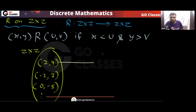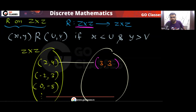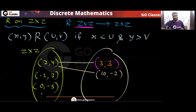Can you find an element to which (2, 4) is related? Yes — (2, 4) is related to (3, 3), and also to (10, -2). Similarly, (-2, 3) is also related to (10, -2), since -2 < 10 and 3 > -2.